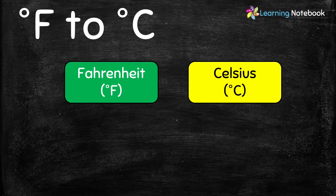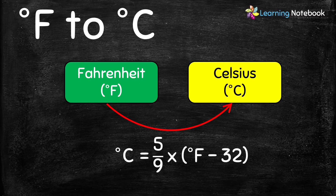Celsius is denoted by degree C. So to convert Fahrenheit to Celsius, we need to know that Celsius equals 5 by 9 into F minus 32. Now let's solve some questions.